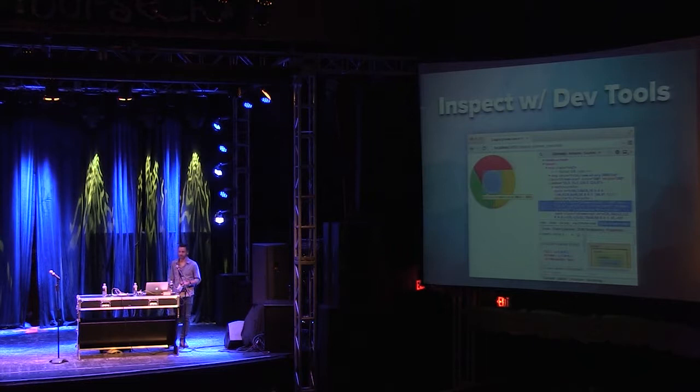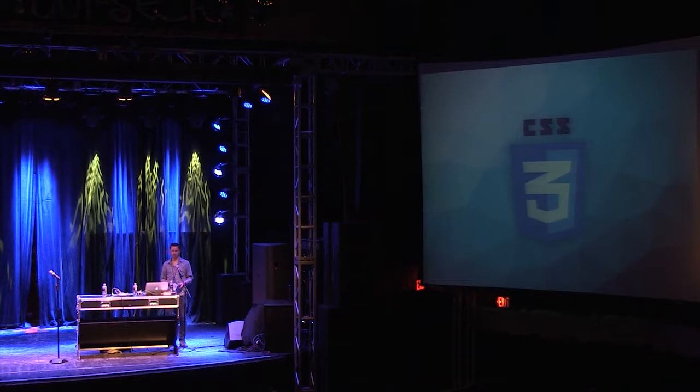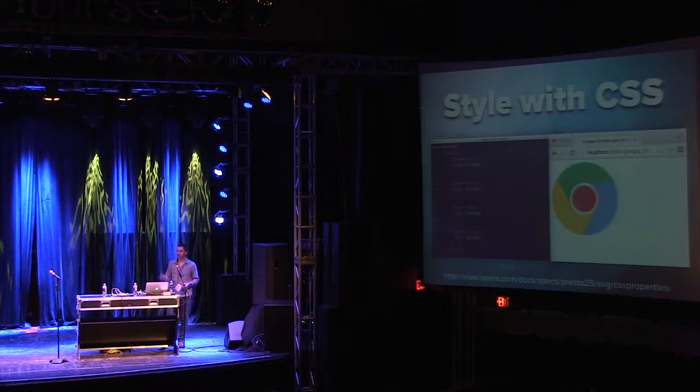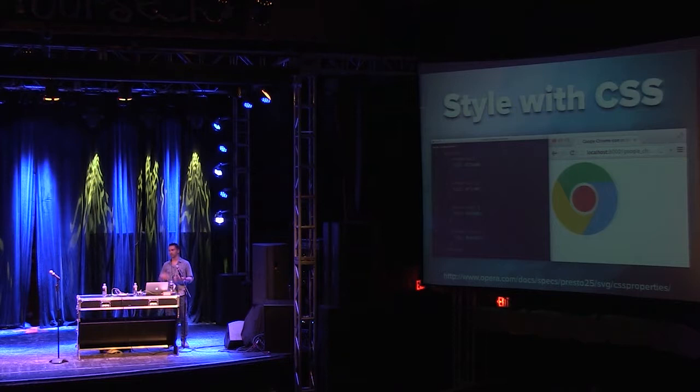You can also manipulate SVG with CSS. Here's an example of the Chrome logo — I've gone in and added classes to the different areas of the Chrome logo and colored them differently, using just CSS. One thing to keep in mind is that SVG has a couple different rules compared to plain CSS. For example, instead of using background-color, you actually have to use the fill property to change that value. But for the most part, you can do pretty much everything else in CSS with it.